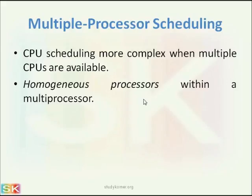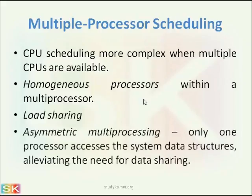On homogeneous processors within a multiprocessor — homogeneous processors means symmetric multiprocessing. We also have to take care of load balancing. There should not be a case where one CPU is overloaded while other CPUs are underutilized.